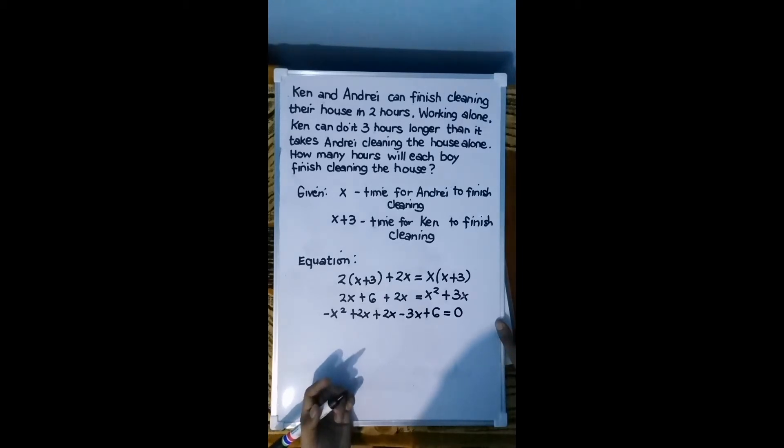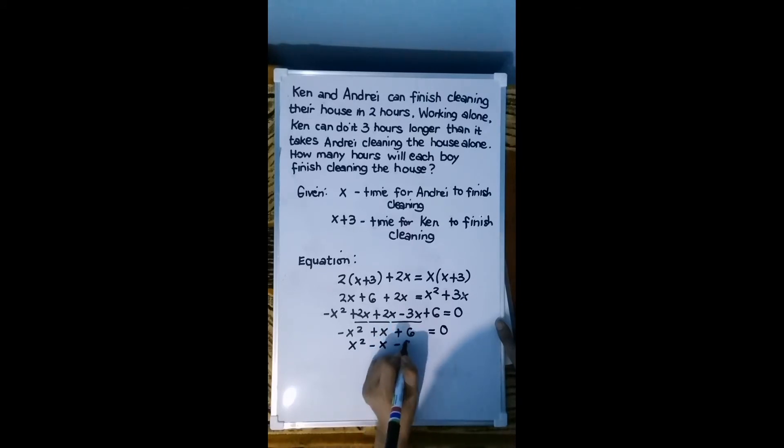Combine like terms. So negative X squared, then 2X plus 2X is 4X minus 3X, you have here positive X, then plus 6 equals 0. Since negative is in front, just change all the signs or multiply by negative 1. So you have here X squared minus X minus 6 equals 0.